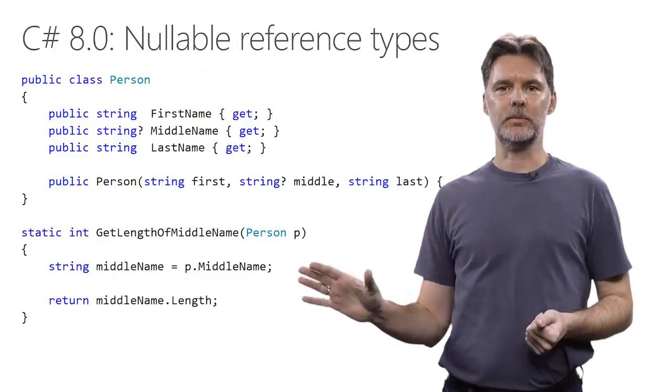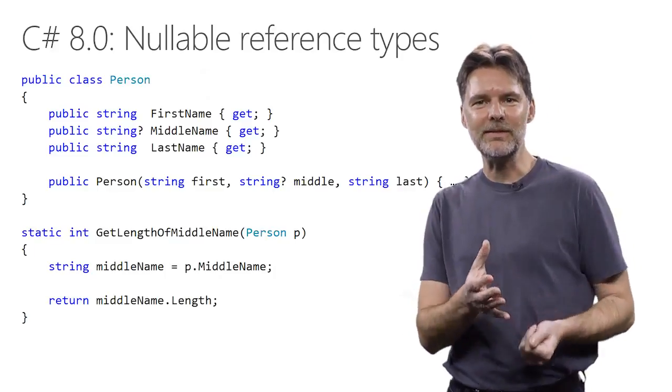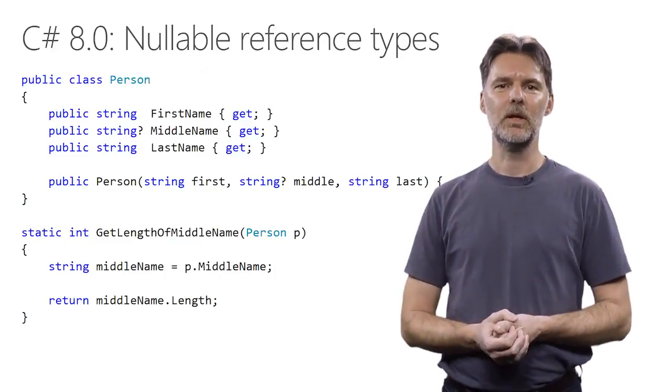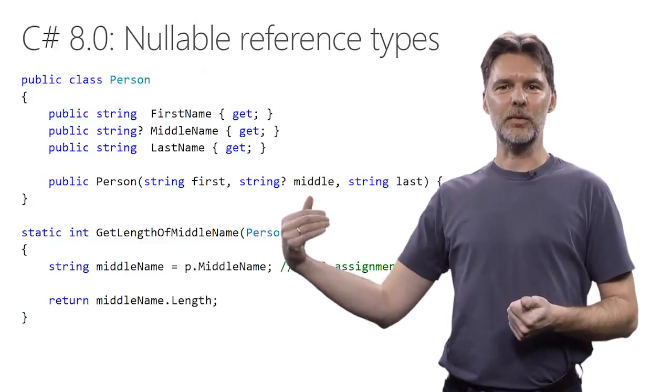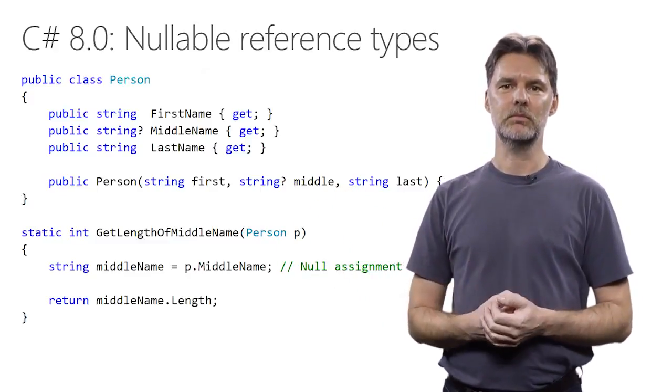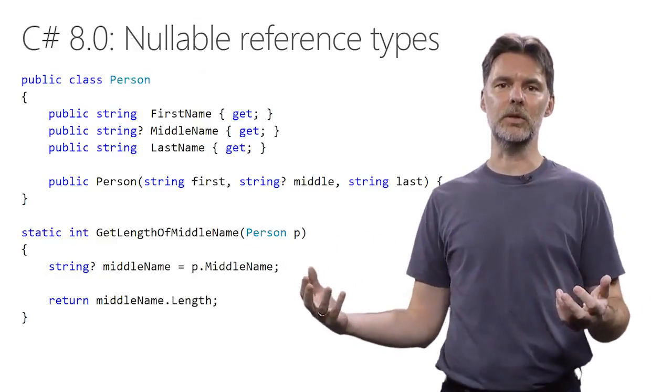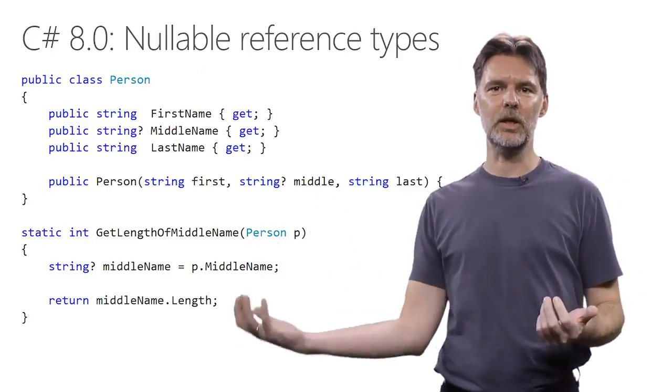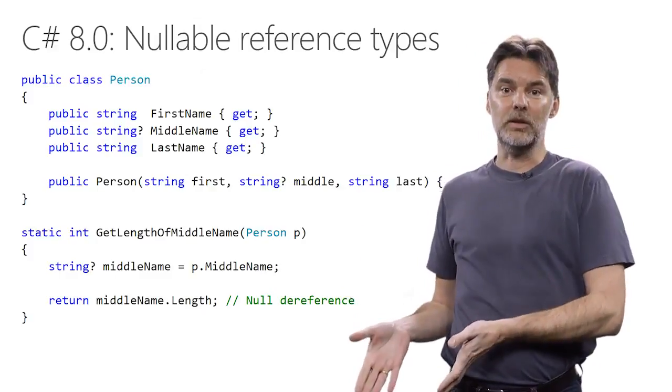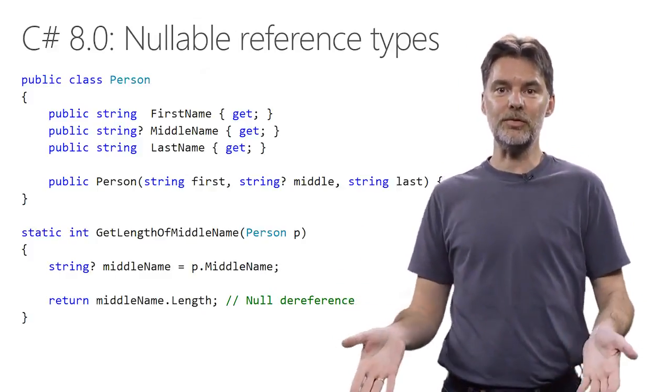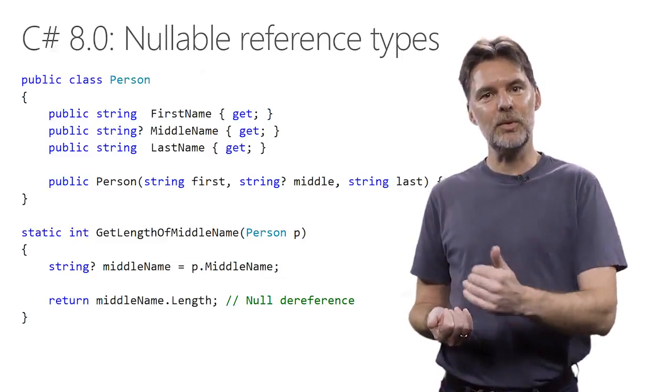Let's look at a method that uses it. It does have a bug in that it made a reference a null middle name. So, let's see how the feature helps find and fix the bug. First, it's going to warn us that it's assigning the nullable middle name of the person to a non-null local variable. We can fix that just by adding a question mark to the type of the local variable as well, making it nullable. So, now the assignment is fine. Nullable to nullable. But now we get a warning that we may be dereferencing a null value. The compiler won't let you dereference a nullable reference, unless you convinced it somehow that it's not actually going to be null at the point of dereference.